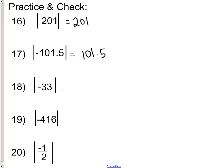What's the absolute value of negative 33? Positive 33 or just 33. What's the absolute value of negative 416? Positive 416. That's the distance from 0. How far is negative 1 half from 0? That's what it's asking. What's the absolute value of negative 1 half? It's 1 half.